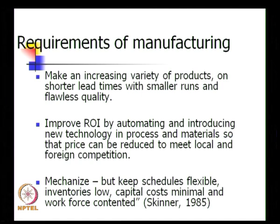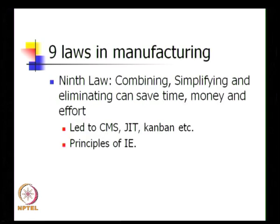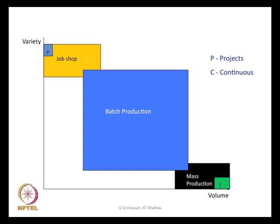Before we get into how manufacturing systems have tried to meet these requirements, let us look at one aspect — the ninth law — which we described: combining, simplifying and eliminating can save time, money and effort. The basic idea of this law is to keep it simple and not complicate things. Manufacturing systems have tried very simple yet effective approaches sequentially and systematically. We look at a graph which talks about the various types of production systems and how they are classified.